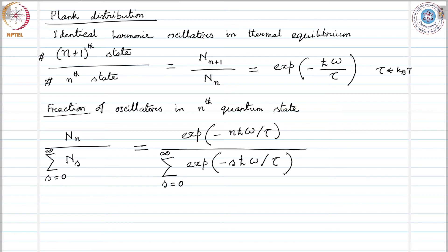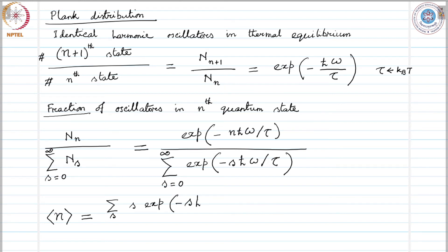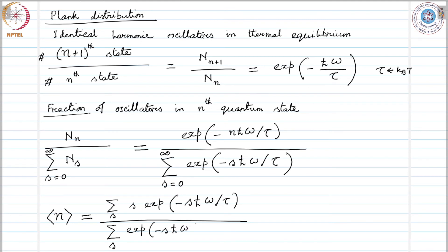The average oscillation quantum number of an oscillator can be found by averaging over n using this distribution function. We multiply the numerator by s and sum over s, while the denominator remains unchanged. So it is given as: sum over s of [s times exponential(minus s h-bar omega over tau)], divided by sum over s of [exponential(minus s h-bar omega over tau)].